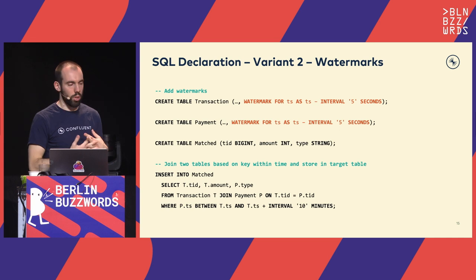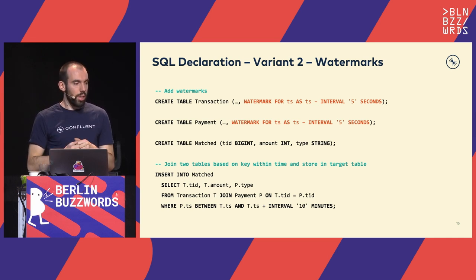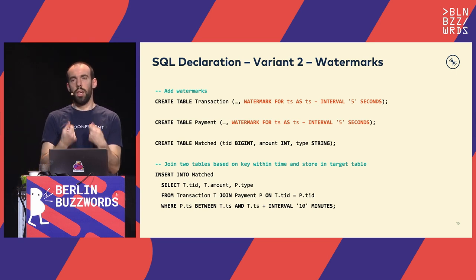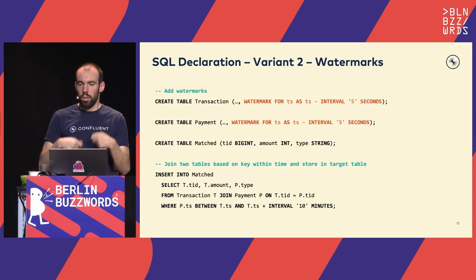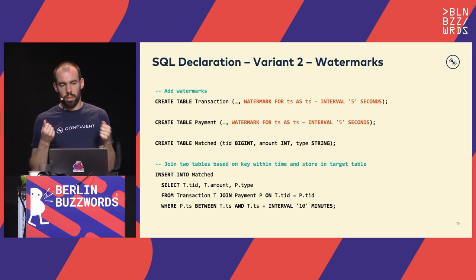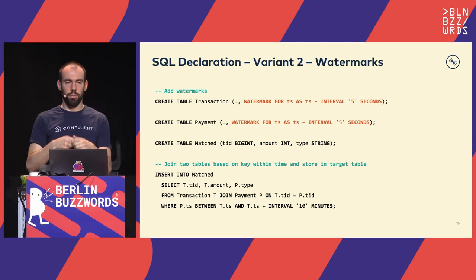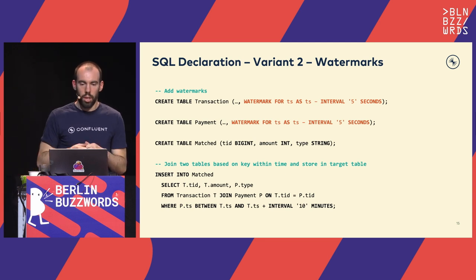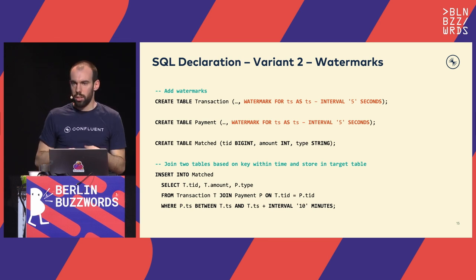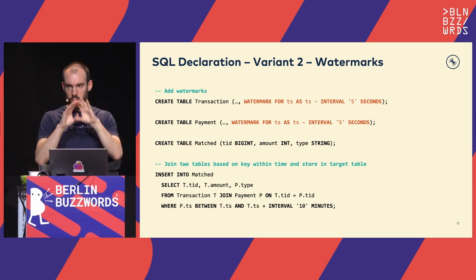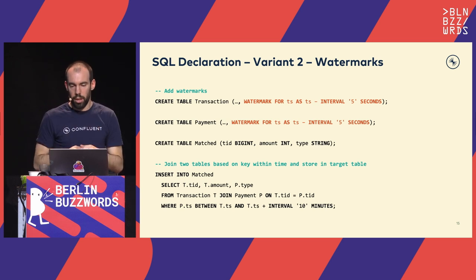We can also make this more sophisticated using Flink's watermark concept. Watermarks make the pipeline more efficient. All you need to do is tell the system the maximum lateness of an event — in this case, we don't expect transactions coming in after five seconds, so five seconds is the maximum network lag. The join itself remains exactly the same query; only the table declarations have changed.